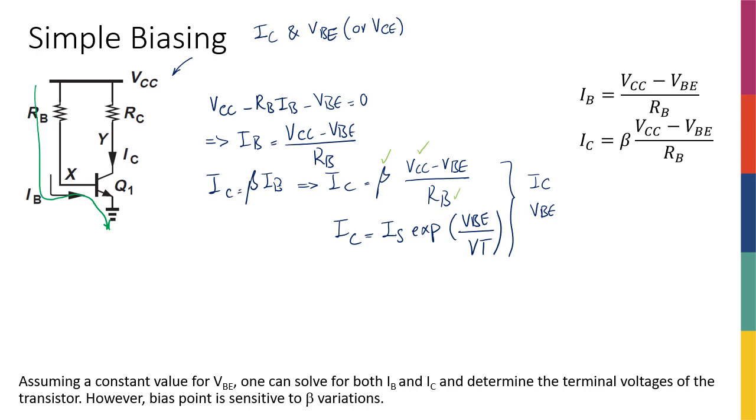So I can actually find IC and VBE using the system of two equations, two unknowns, and then I can work my way back. I can say that if the question was telling me to design the circuit to have a certain value of IC, let's say the question was telling me to design the circuit to have an IC equal to 5 milliamps.